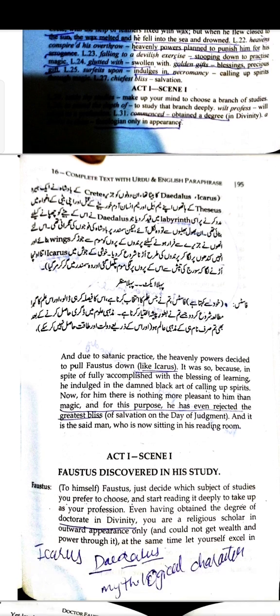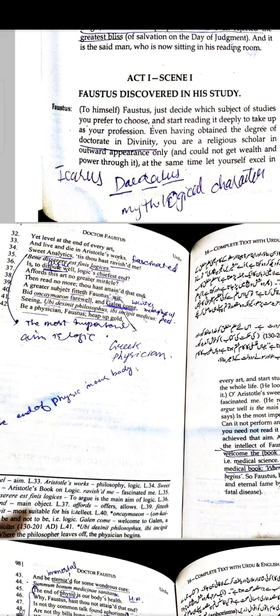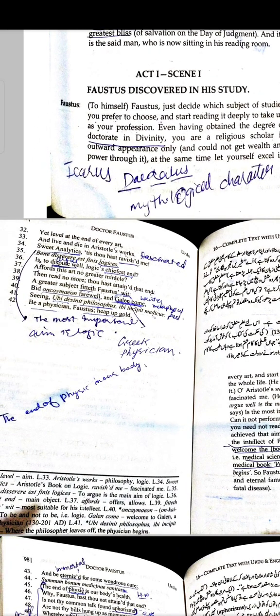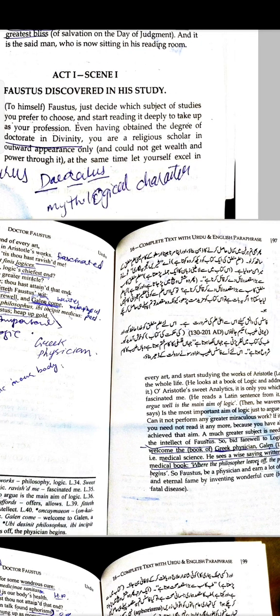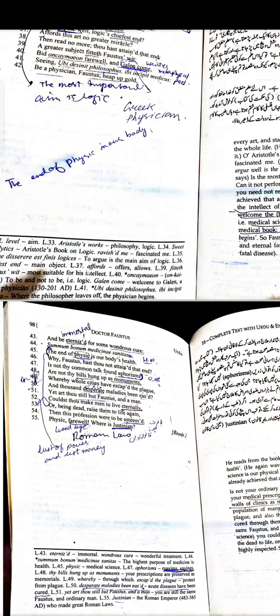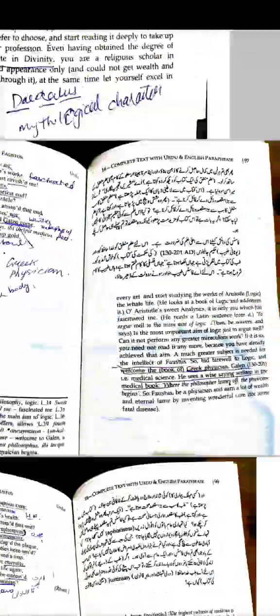First scene, then a few lines that are very important. I'm going to tell you which ones are important, what the hidden meanings are, and how to write the explanation. We have discussed today 55 lines of Act 1, and in this Urdu translation you can follow along with the explanation.